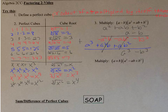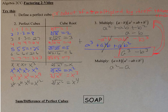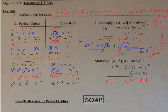When I factor the difference of perfect cubes, I get this form. Now let's do the bottom: (a²−ab+b²) times (a+b). Multiplying by b: b×b²=+b³, −ab×b=−ab², b×a²=+a²b. Then multiplying by a: a×b²=+ab², a×(−ab)=−a²b, a×a²=a³.